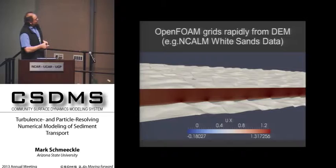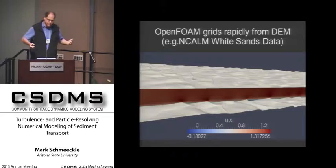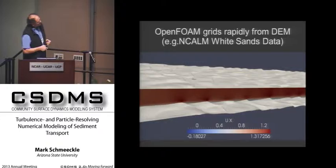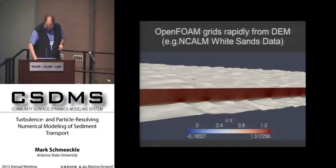This is NCALM data of White Sands. I downloaded it and it took me about an hour to develop a surface and do the gridding. It's very easy to add routines to OpenFOAM — this is a simple 2D simulation but it's easy to do 3D. So this is flow over dunes in White Sands, and then you can use that to do morphodynamics of dunes as well.